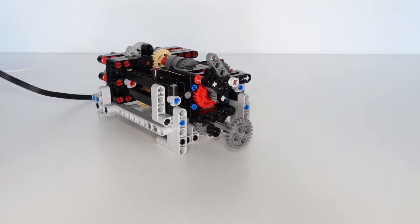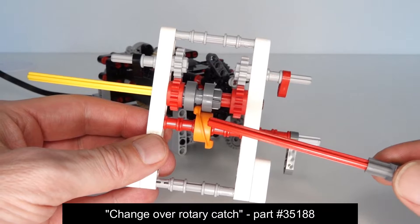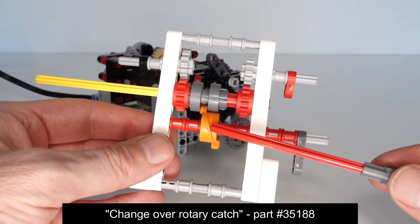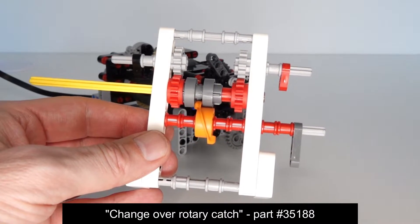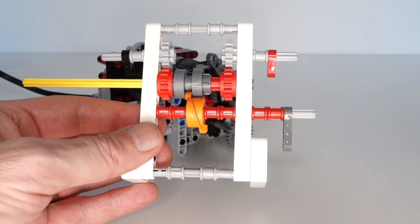So if you're wondering how this gearbox works, central to this design is one of the relatively new components from Lego, and that is the rotary changeover catch in the middle here. This is a very exciting new component that came out in 2018. It's only been used in three sets that I know of.